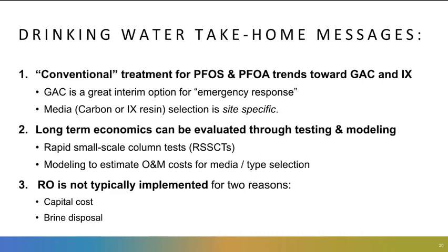The vessels and ancillary equipment for a GAC or ion exchange contactor are a relatively small overall cost component compared to the cost of replacing media with any frequency, so you really want to optimize for that before you decide on a treatment approach. Reverse osmosis — membrane-based treatment — wasn't on the graphic, but it's something we use often in water treatment, for example for desalination. It's not typically implemented for PFAS for two reasons, even though it's very effective: the systems are really capital-intensive, especially for small well systems, and you still have to dispose of a liquid brine, which is much more challenging than disposing of solid waste.